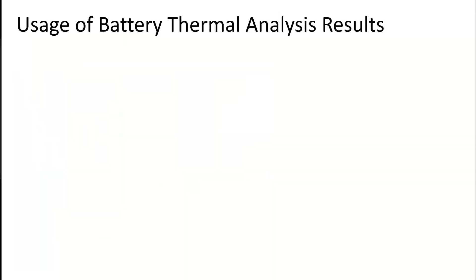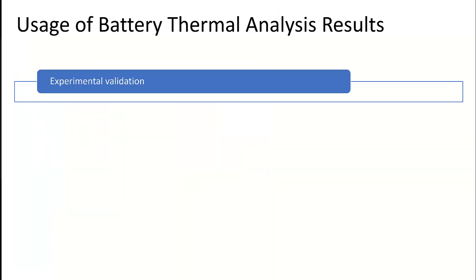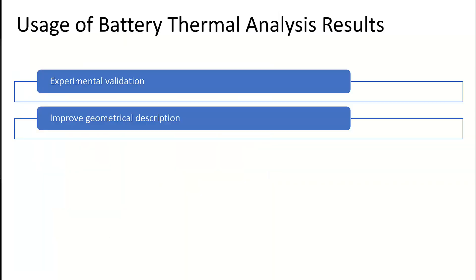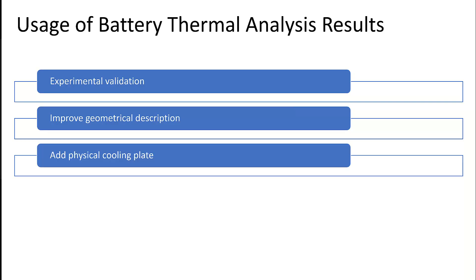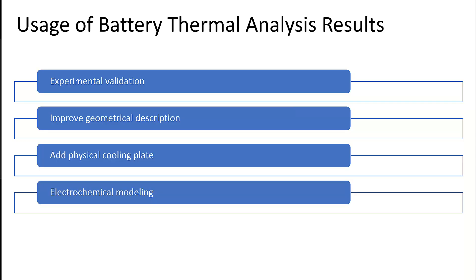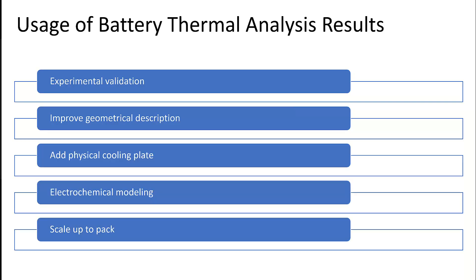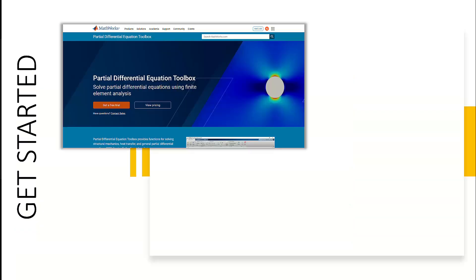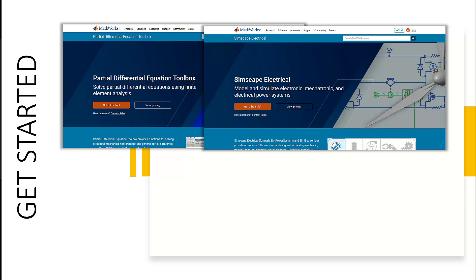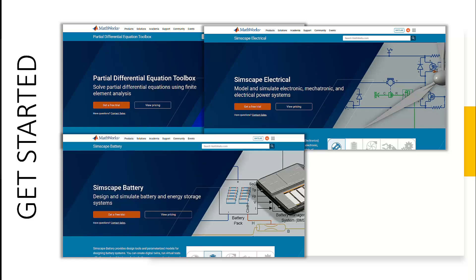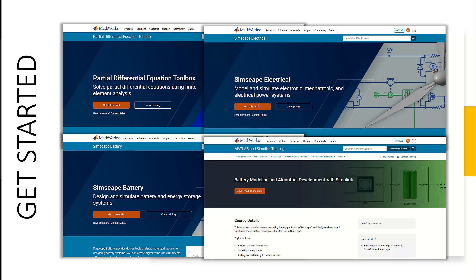You can use these results for experimental validation, improving geometrical description, adding physical cooling plates, electrochemical modeling, and scaling up a pack. You can explore our tools such as PDE toolbox, Simscape Electrical, and Simscape Battery. Battery modeling and algorithm development is a course that would help you get started with the workflow. Thank you for your time.